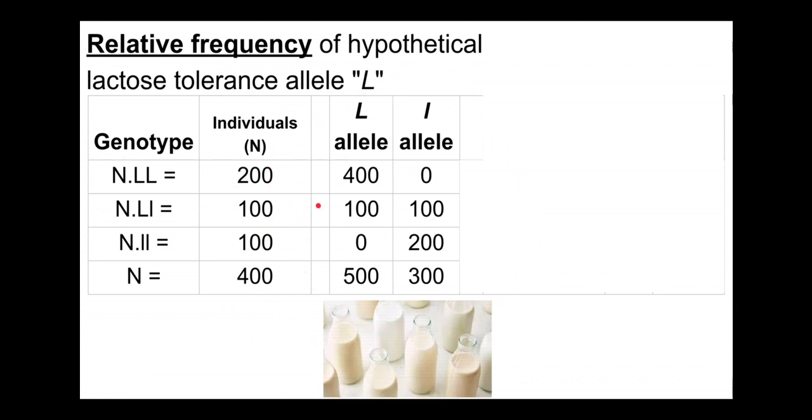We can extrapolate out from these genotype frequencies to a gene pool way of looking at things. Each individual contributes two alleles or two chromosomes or two gametes to the gene pool. Each individual is diploid. So 200 individuals have 400 chromosomes bearing the big L allele, contributing 400 big L alleles to the gene pool.